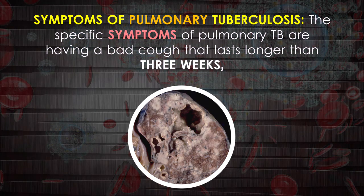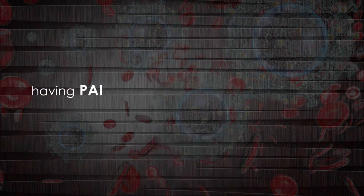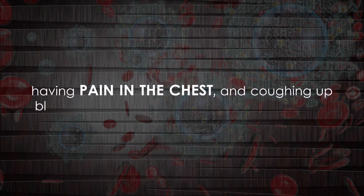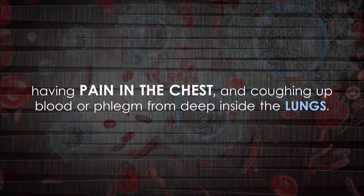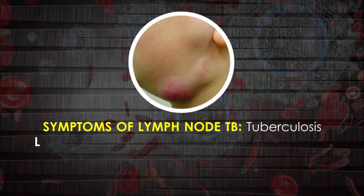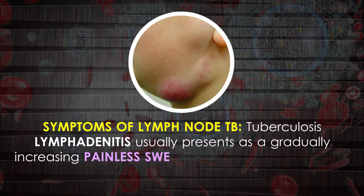Symptoms of pulmonary tuberculosis include a bad cough that lasts longer than three weeks, pain in the chest, and coughing up blood or phlegm from deep inside the lungs.